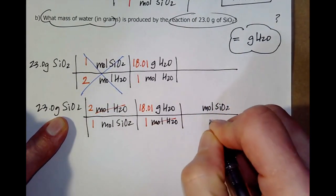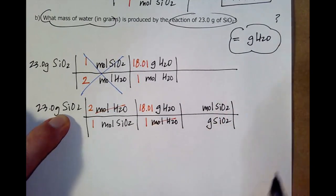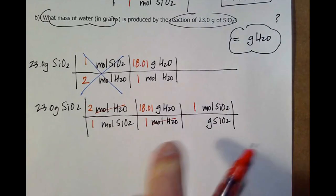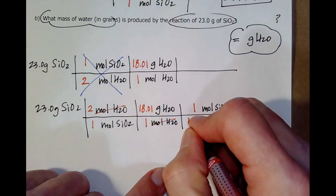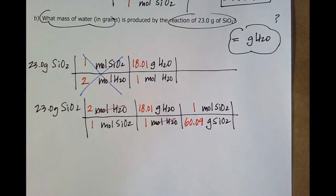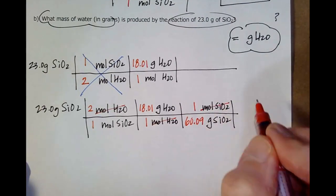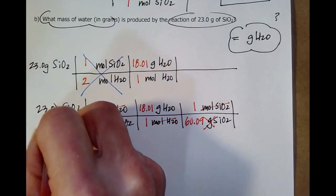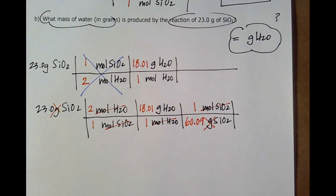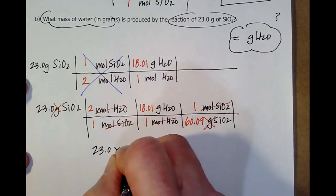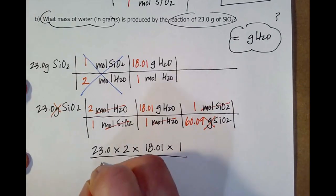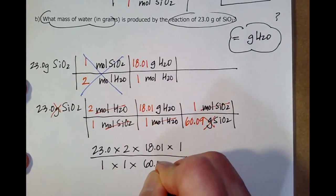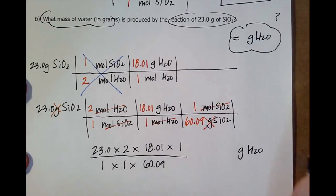So, I go moles SiO2, grams SiO2. Now, I'll give you this number. Stop the video and calculate the molar mass of SiO2. Okay, depending on which periodic table you used, how many sig figs you had, I had that. And I can see now, moles of SiO2 will cancel. Grams of SiO2 will cancel. And bingo. I know I've got this math right. So, 23.0 times 2 times 18.01 times 1, divided by 1 times 1 times 60.09. And I know that's grams of water.